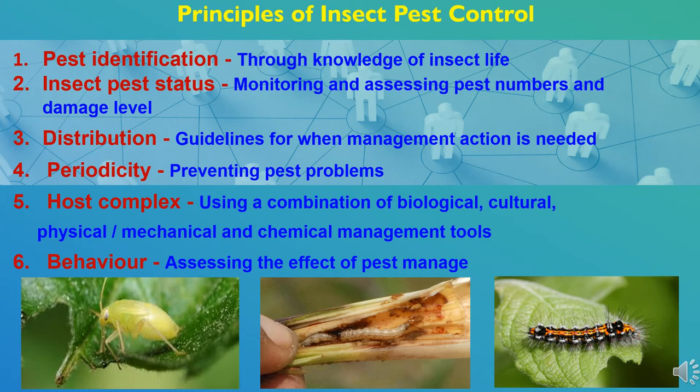Fifth is host complex, on the basis of which we can take a combination of biological, cultural, physical or mechanical, or chemical management tools. And sixth is behavior, by which we can assess the effect of pest management. So all these are components of integrated pest management.